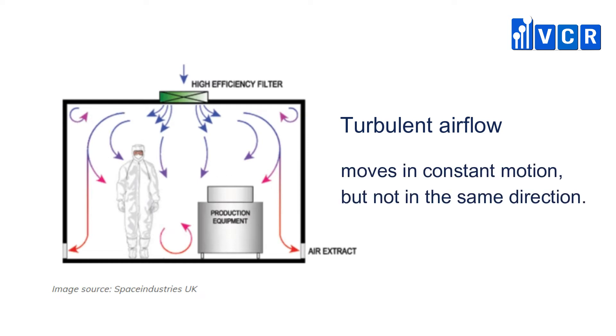Turbulent airflow, or non-unidirectional airflow, uses both laminar airflow hoods and non-specific velocity filters to keep the air in a clean room in constant motion, but not in the same direction.